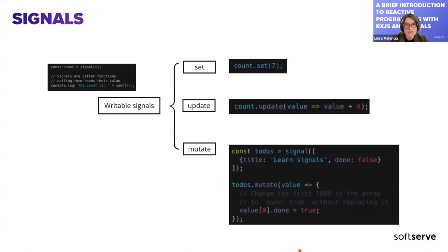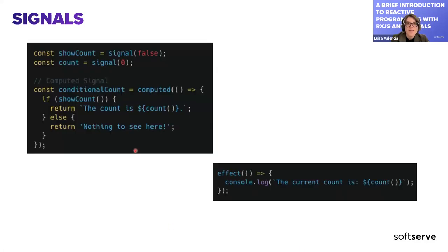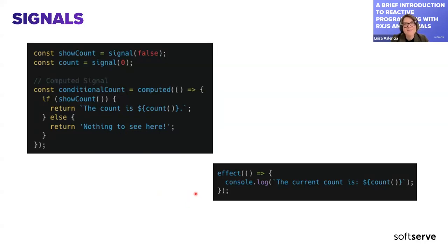For example, a todo signal with title and done properties — when you mutate it, you can set the done property at index 0 to true, modifying just that property while preserving the rest of the signal state. There are also computed signals, which are read-only — you cannot override them directly, but they react to changes in other signals. And effect() — as the name says, it's a side effect — it lets you follow and react to changes on a signal in a specific case.